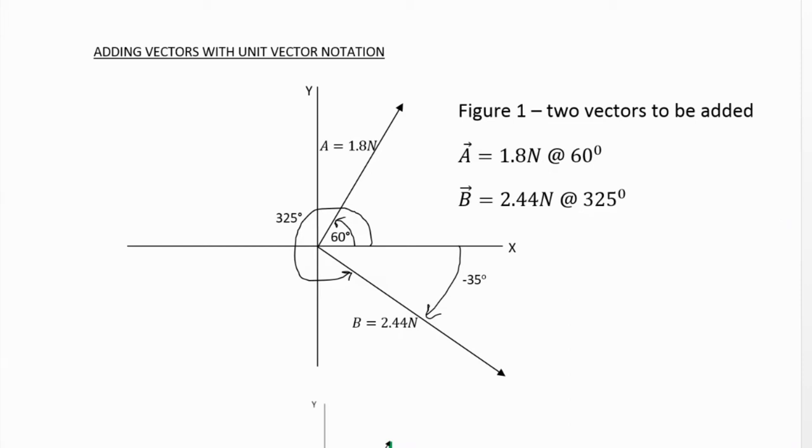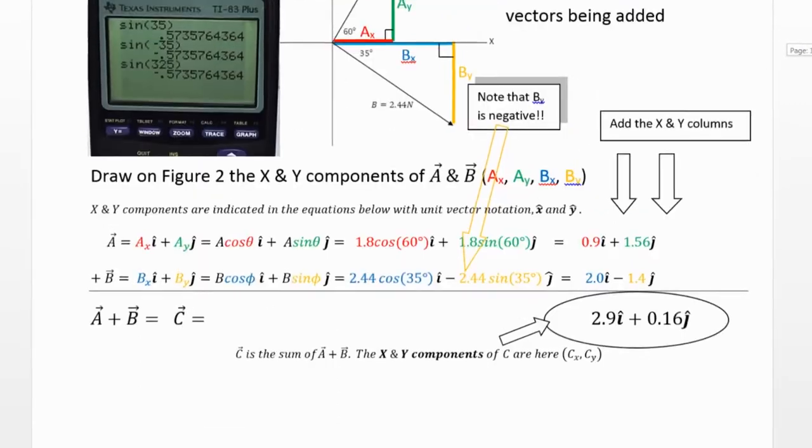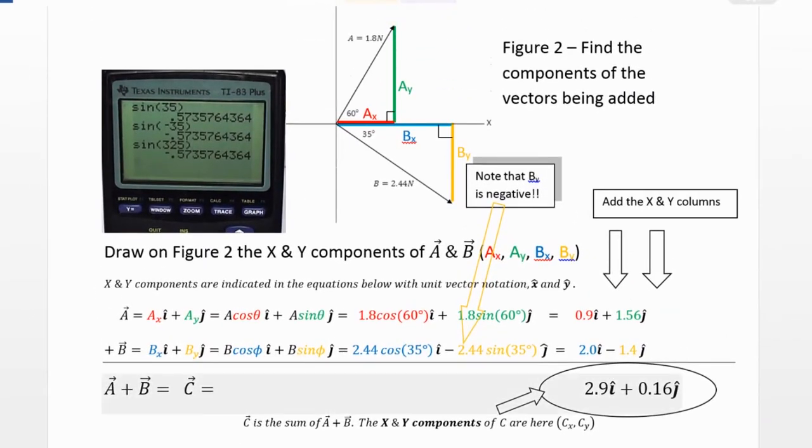So what we're going to do is we're going to break our vectors down into their x and y components. And we're going to use sine and cosine to do that. So here I've labeled the x and y components of vector A, Ax in red, Ay in green. And likewise, my x and y components for B, Bx in blue, and By in yellow.